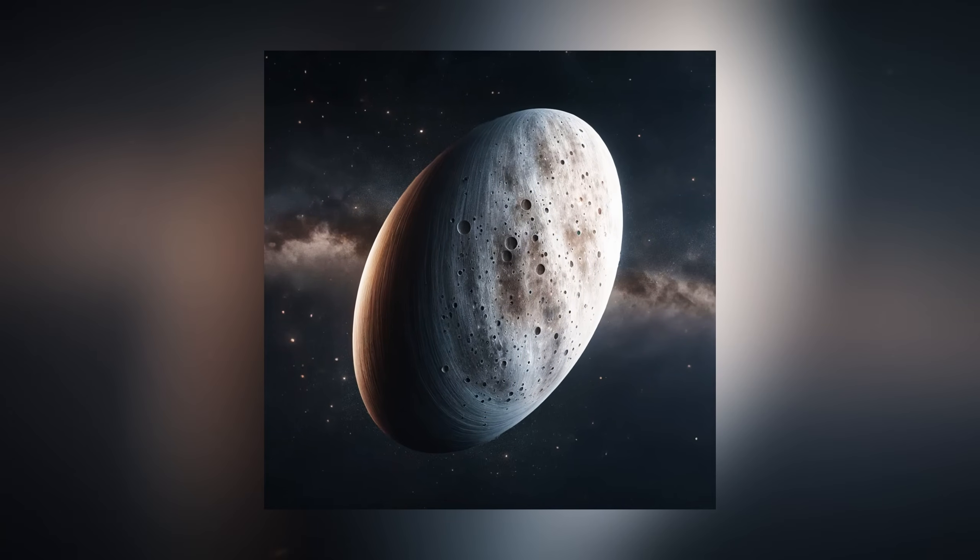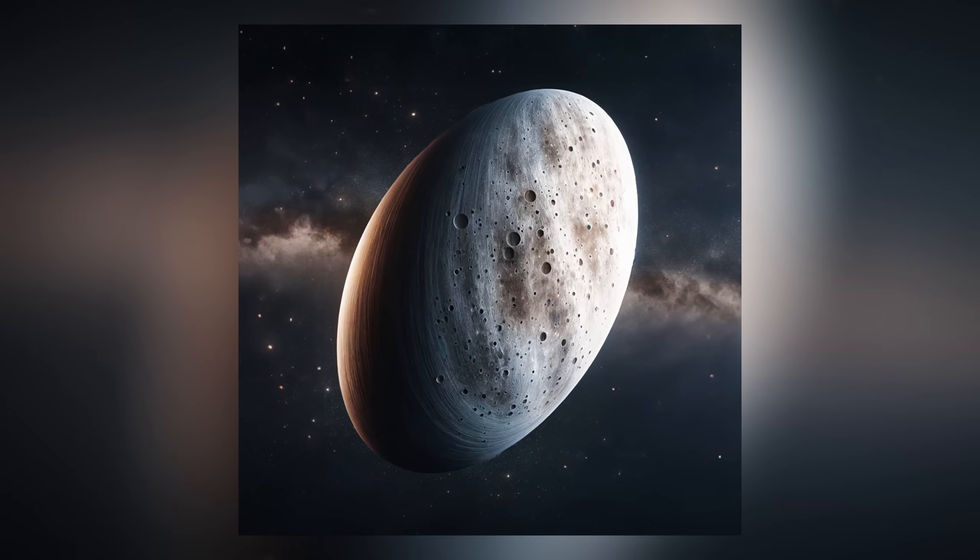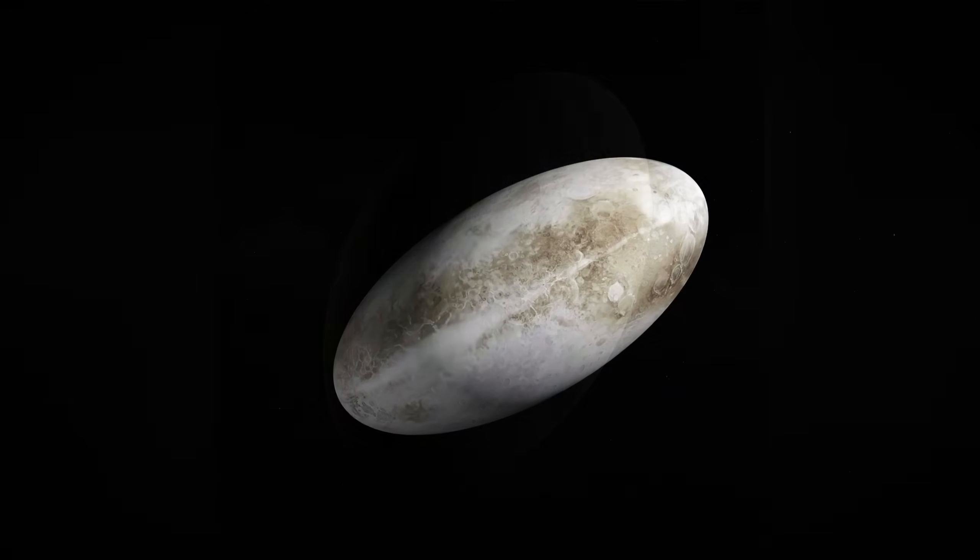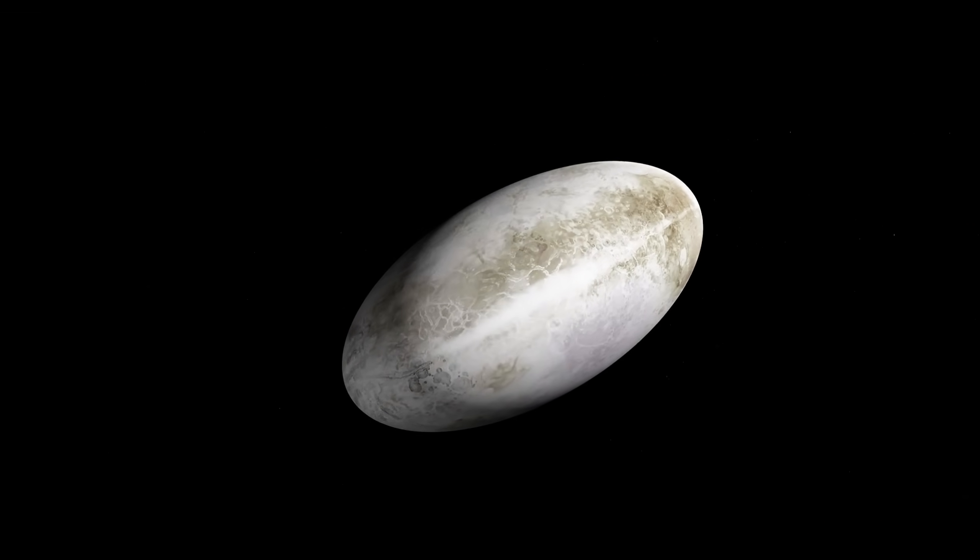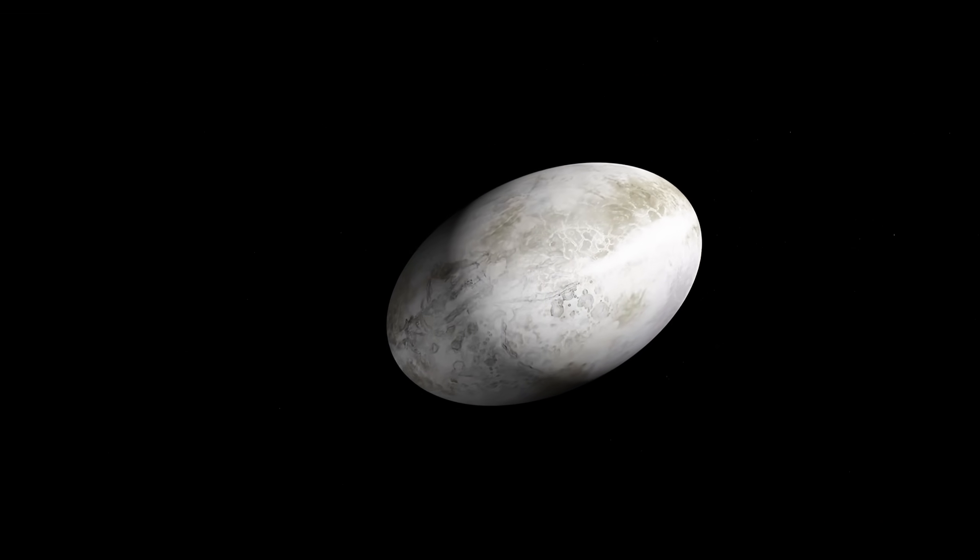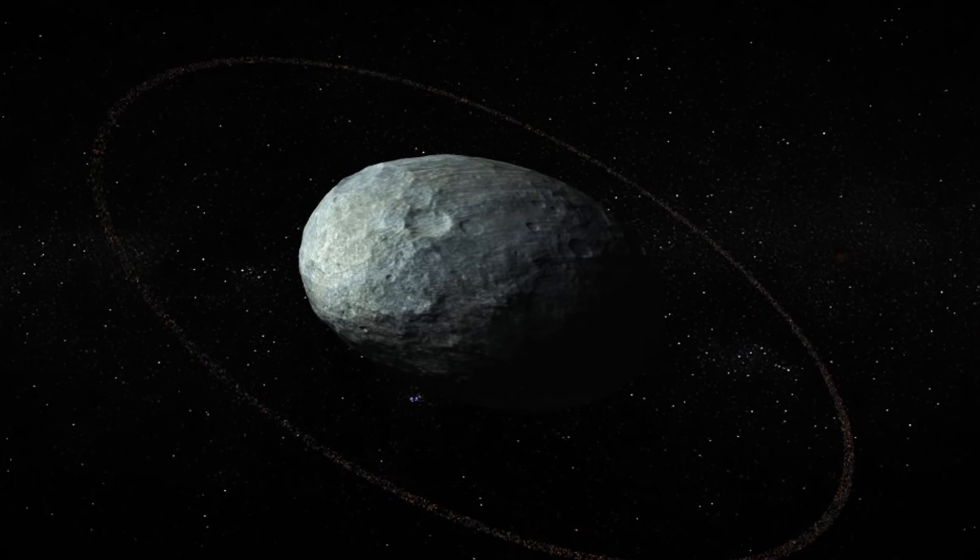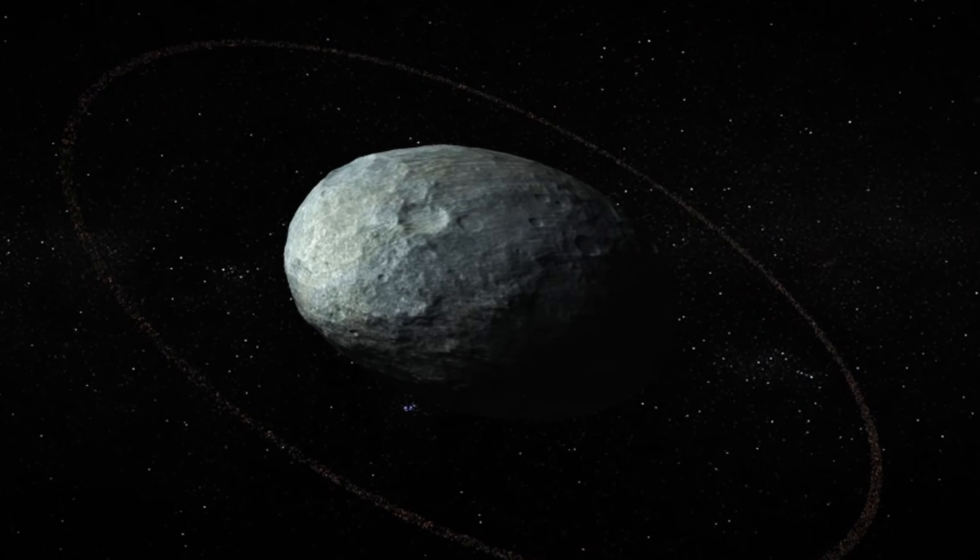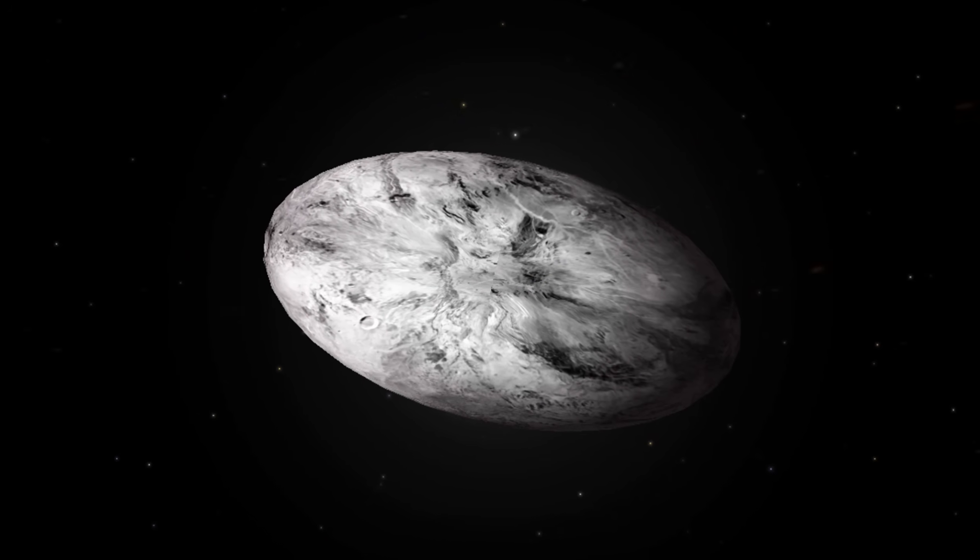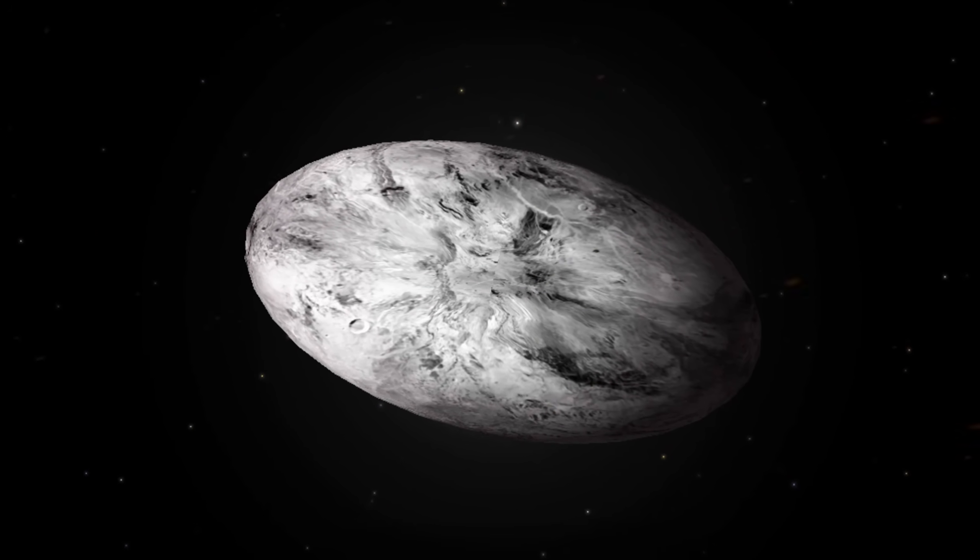Haumea, discovered in 2004 by a team led by Mike Brown, has a unique elongated shape, possibly due to its rapid rotation, adding to the diversity of the Kuiper Belt. Haumea is about 1,960 km in diameter and has provided valuable insights into the characteristics of Kuiper Belt objects.